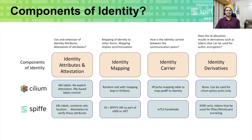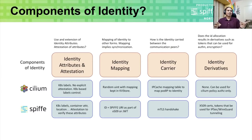When it comes to carrying the identity across peers, Cilium achieves it by making sure that the IP cache — a mapping table to map pod IP to identity — has been made use of. This IP cache is what is used by the peers to identify the identity of the remote entity. In case of SPIFFE, MTLS handshake is used. At the end of the MTLS handshake, both peers know each other's identity, which is carried as part of the certificates.